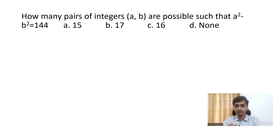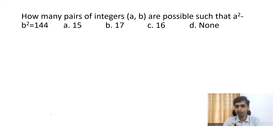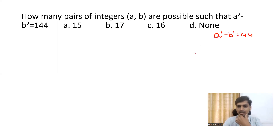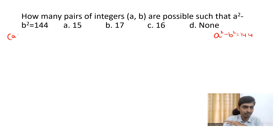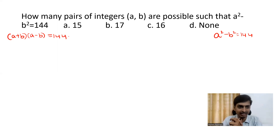A squared minus B squared equals 144. The challenge is to find how many pairs of integers satisfy this equation. We want to identify the concept. A squared minus B squared is nothing but A plus B into A minus B — even a sixth grade student will tell you that. Now we have to use our brain.